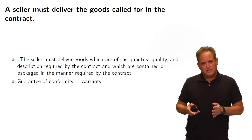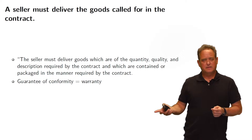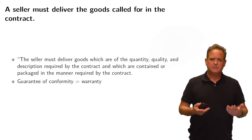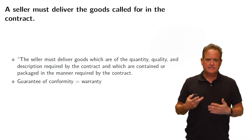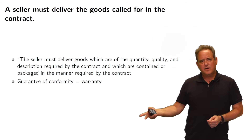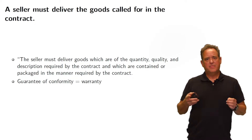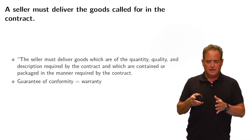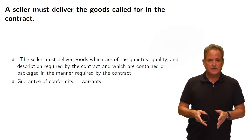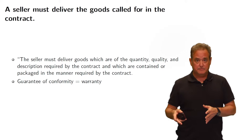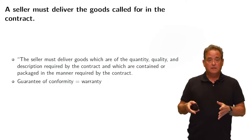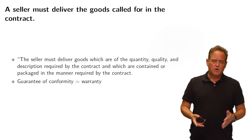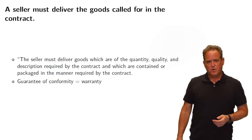Conformity is closely related to the idea of warranty. A warranty is essentially a guarantee of conformity — a guarantee that the goods will match the description in the contract. To ensure that guarantee is met, the seller agrees to be bound by that obligation. So a warranty is a guarantee of conformity.